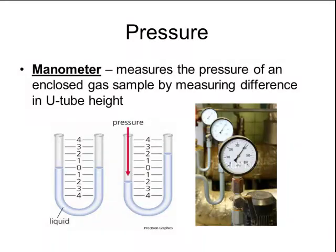Another device that measures pressure is called a manometer. This measures pressure by using a U-shaped tube and attaching an enclosed gas sample to one side of the tube. That gas creates pressure on one side of the U-tube, pushes the liquid up the other side, and the difference in the height of the tubes allows us to determine the pressure. Normally a manometer is hooked up to a gauge that uses a needle to read the pressure.